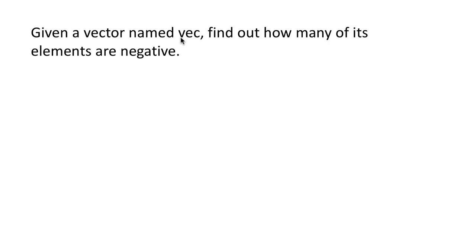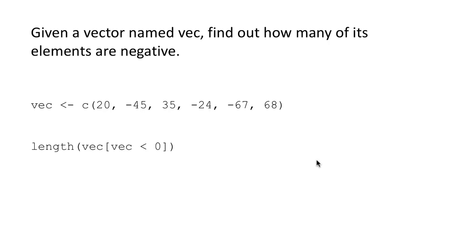Another problem: given a vector vec, find out how many of its elements are negative. We are not saying extract the negative elements — we are just saying tell me how many of these elements are negative. The way we do this is to use subsetting to get the negative elements and then find the length of that vector. Here we have a vector with three negative elements and three positive elements. All you have to do is say length of vec[vec < 0], which gives us all the negative elements — minus 45, minus 24, minus 67 — and we just say give me the length of that.